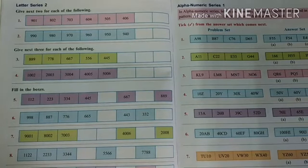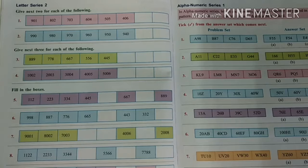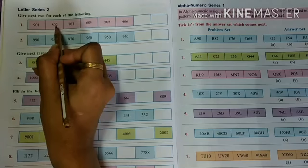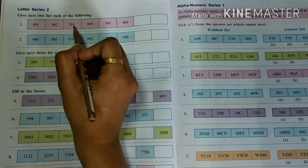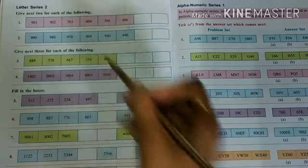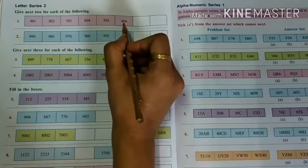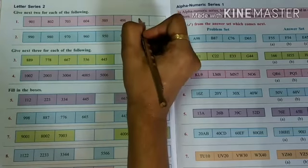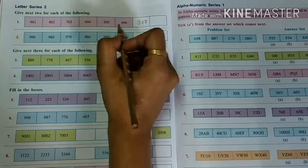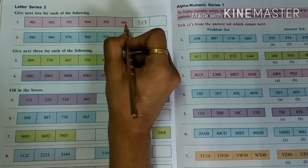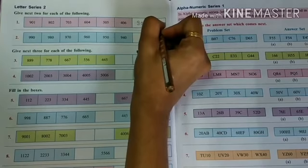Now page number 8, Letter Series 2 — give the next 2 for each of the following. Number 1: 9, 0, 1 then 8, 0, 2. The first number is decreasing, the second number remains constant, and the third number is increasing. After 2, 3; 0 remains constant; and before 8 comes 7. Continuing: 4, 0, 6 — you write 3, 0, 7. Before 4 comes 3, 0 remains constant, and after 6 comes 7. Then 2, 0, 8.